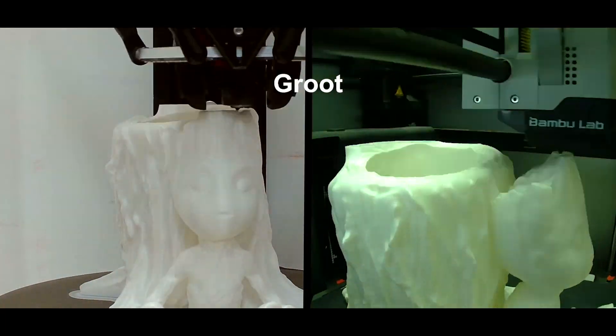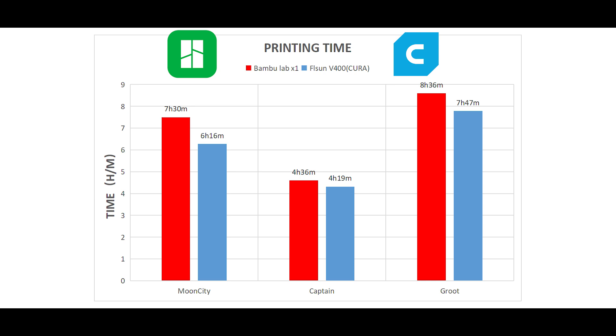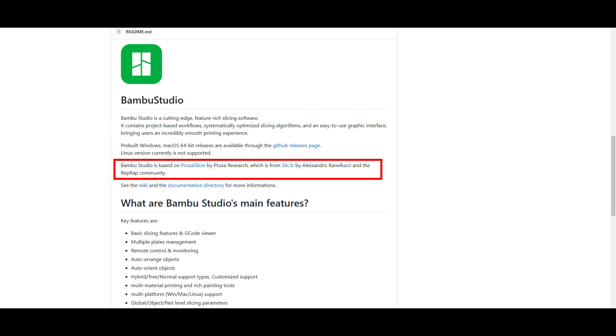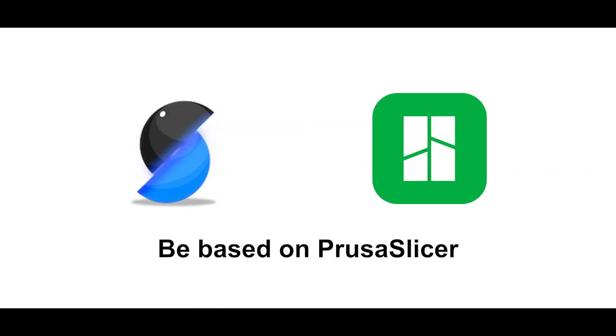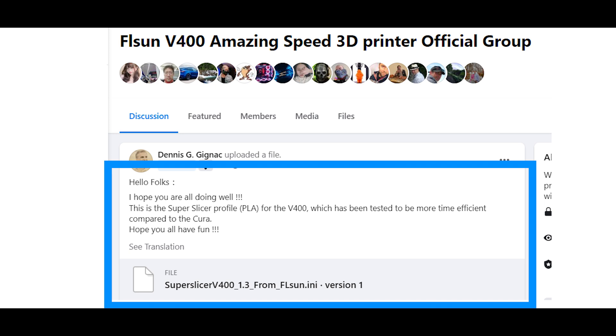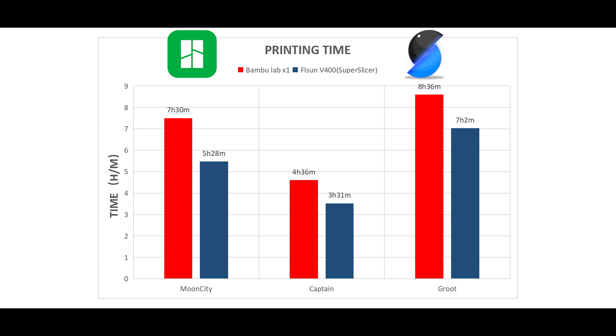The final print time is shown in the picture, and the V400 is always ahead. Due to the fact that Bamboo Studio is based on a Prusa Slicer adaptation, I found a Super Slicer that is also based on the Prusa Slicer adaptation. The difference between the two slicers will be less, and thanks to a friend who shared their parameters in the group, the print time is shown in the picture.